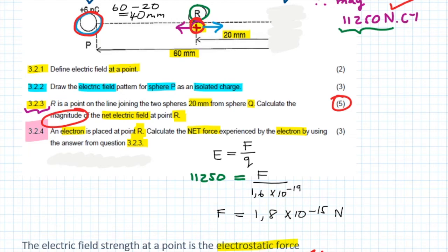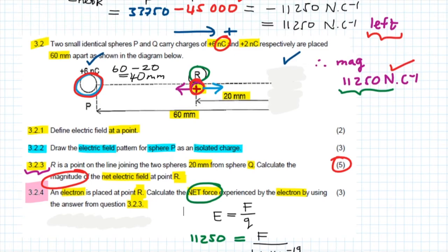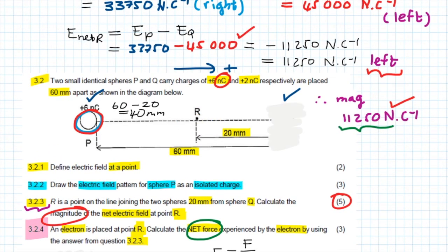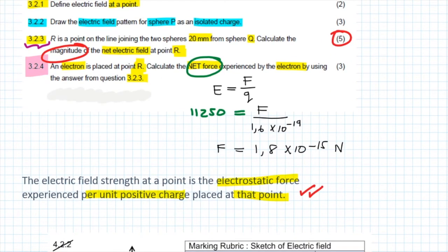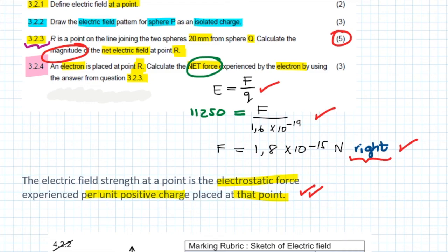This is force and therefore measured in newtons. But they did not say calculate the magnitude of the force — they said calculate the net force — so we need to include direction, because force is a vector quantity. The net electric field is to the left, which is the direction a positive test charge would move. Since we are looking at a negative test charge, it will experience a force in the opposite direction — towards the right. Therefore, the answer to 3.2.4 is 1.8 times 10 to the negative 15 newtons to the right. You get one mark for the formula, one mark for substitution, and one mark for the final answer with direction.